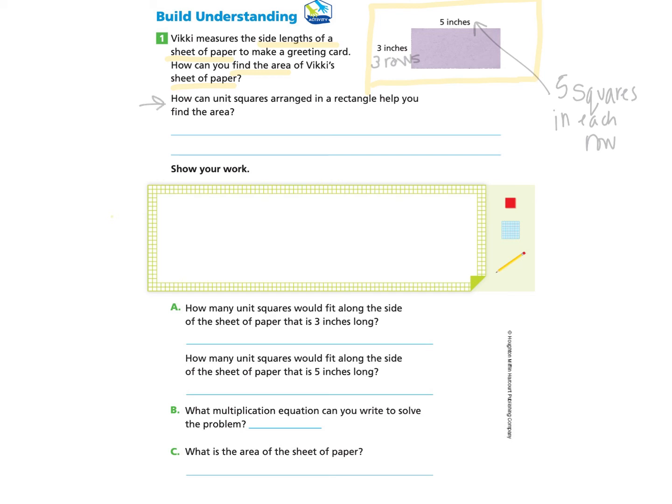And in each row, there are going to be 5 squares in each row. So explaining what I'm going to be doing: how can unit squares arranged in a rectangle help you find the area? What I've learned is I'm going to multiply the number of unit squares by the number of rows.